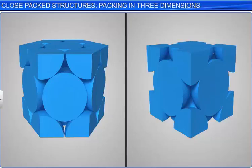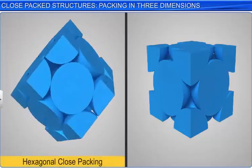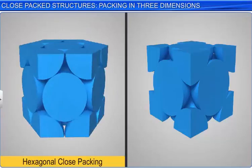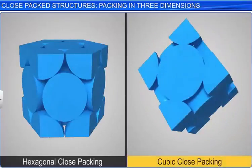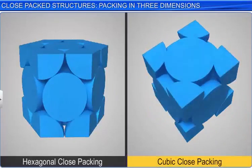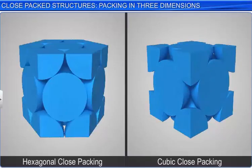Both the forms — hexagonal close packing and cubic close packing — are equally efficient in terms of filling up space. In both of them, 74% of the space in the crystal is filled up.